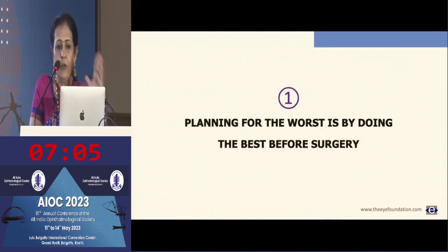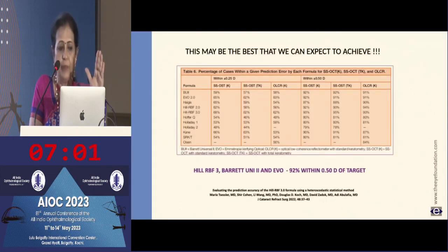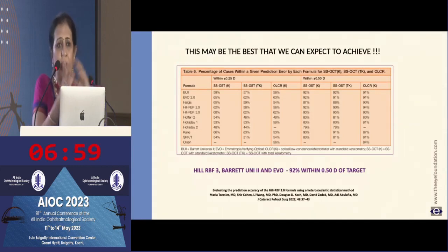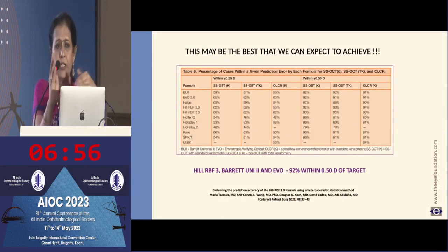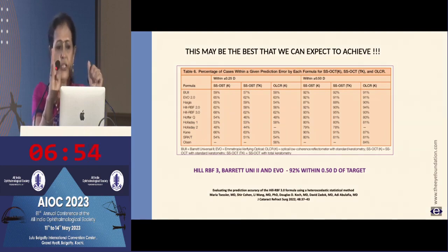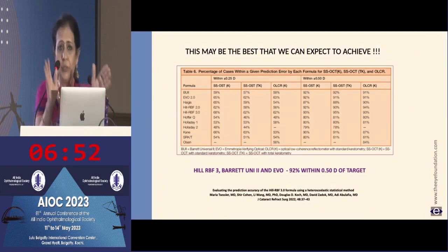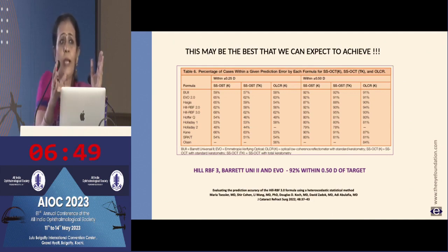Planning for the worst is how you do the best before surgery. We do have a range of intraocular lens formulas — the third generation, fourth generation, fifth generation — and it seemed necessary for you to know how accurate you are with these.